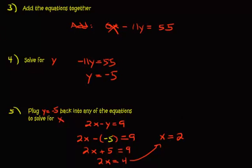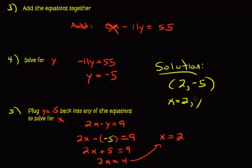Our solution to this system will be 2 comma negative 5, or again, you can write it as x equals 2, y equals negative 5. Go ahead and look for the video that does the addition method where you have one solution and infinitely many solutions.